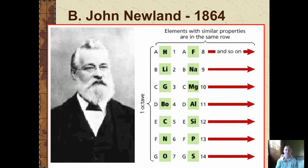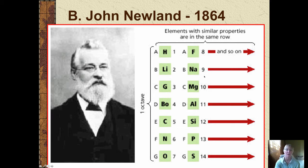He arranged his columns vertically, and as you go from top to bottom, by the time you get to the eighth element, at the top of the next column this is where he began to see the repetition and patterns. Now if you look sideways at it, you see the beginnings of our periodic table. For example, here is lithium and sodium — the first two elements in the alkali metals column on our modern periodic table — grouped together in the same row on John Newland's law of octaves chart.